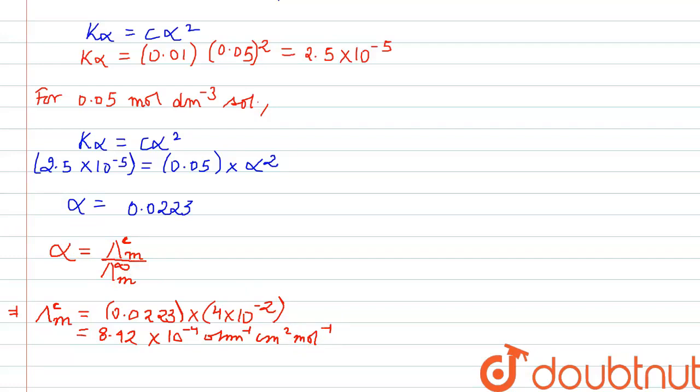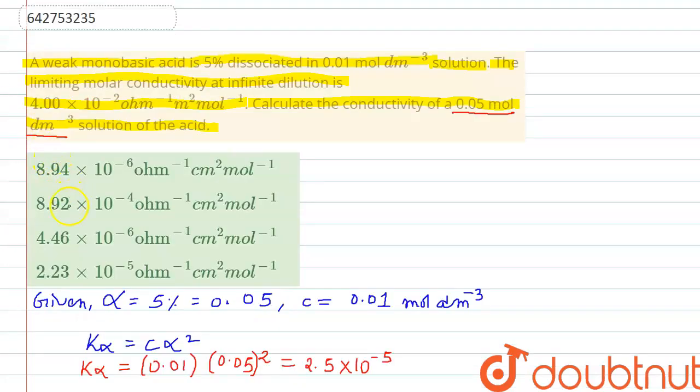From all the given options, we can see that the correct option is option B, which says 8.92 × 10⁻⁴ ohm⁻¹ centimeter² mole⁻¹. So B option is the correct one. Thank you so much.